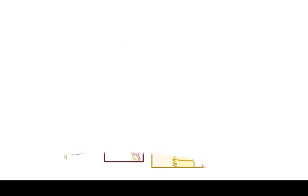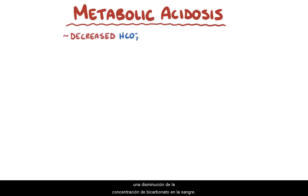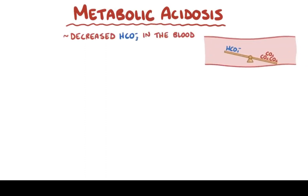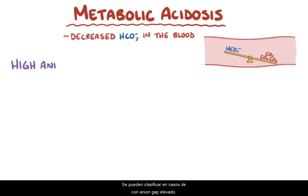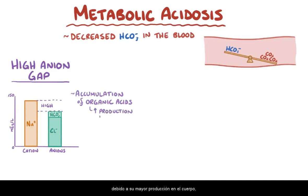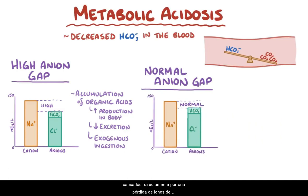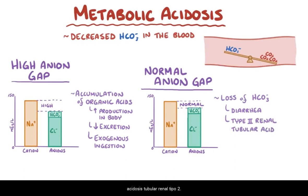As a quick recap, metabolic acidosis is usually caused by a decreased bicarbonate concentration in the blood. It can be classified into high anion gap cases, which are caused by the accumulation of organic acids — either due to their increased production in the body, decreased excretion, or exogenous ingestion. The other type is normal anion gap cases, which are caused directly by a loss of bicarbonate ions, as is the case in diarrhea or type 2 renal tubular acidosis.